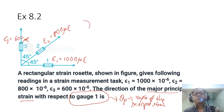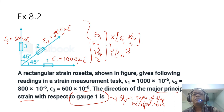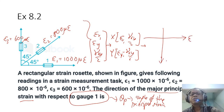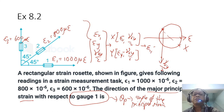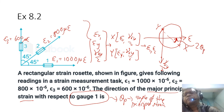To solve this, we use the strain transformation equation. We need to find epsilon x, epsilon y, and gamma xy over 2. With these, we can plot the x-face coordinate (epsilon x, gamma xy/2) and the y-face coordinate (epsilon y, −gamma xy/2), draw the Mohr's circle for normal and shear strain, and from there find the angle 2θ_p to the principal plane.